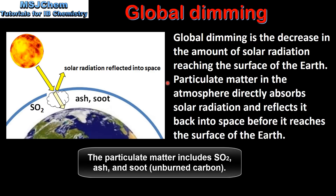Particulate matter in the atmosphere directly absorbs solar radiation and reflects it back into space before it reaches the surface of the earth. This particulate matter is produced from the combustion of coal, oil and biomass.